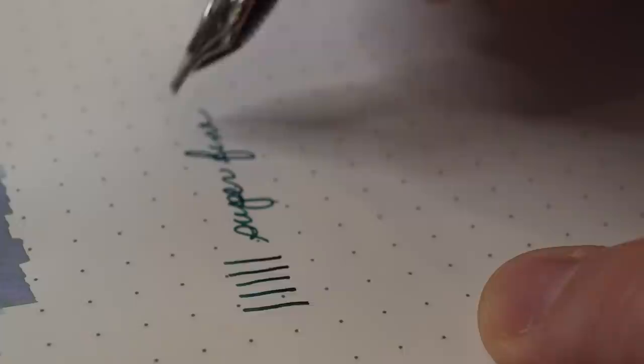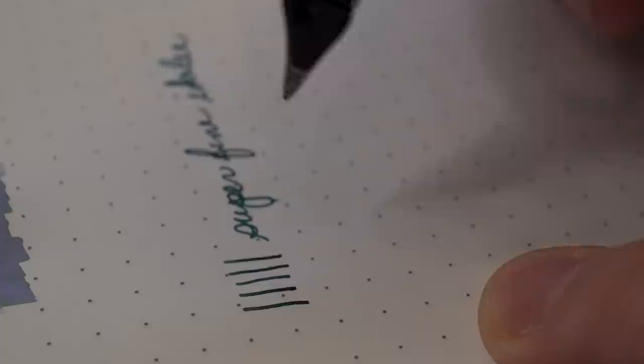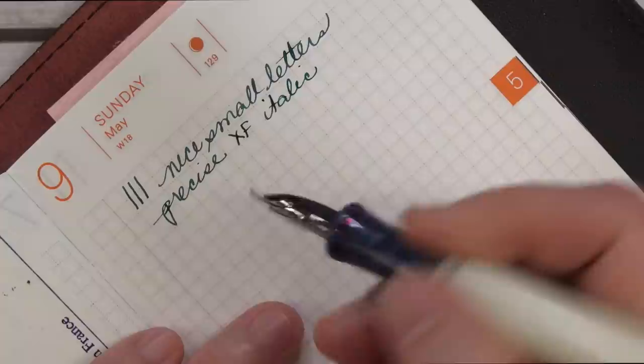As you can see here, this side is a fine cursive italic. It makes for really beautiful tiny writing, but then flip it over, and all of a sudden now you got yourself a big juicy writer.